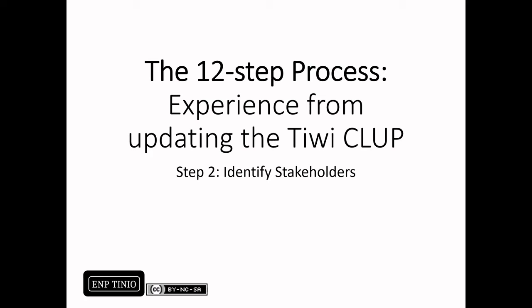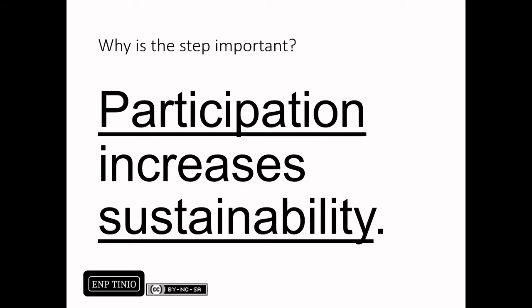Step 2 is about identifying stakeholders. Why is this step important? Participation increases sustainability. More often than not, plans are left on the shelves of local government units and not really implemented because of, among other factors, social rejection. Participation increases sustainability because projects are more likely to be accepted since the LGU has consulted or obtained the buy-in of different stakeholders directly or indirectly affected by these plans and programs.